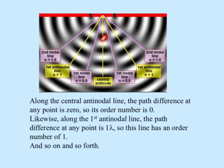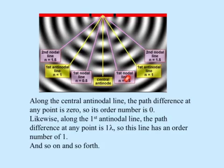Look at this central line. For any point on it, the path from each source is the same, so there is no path difference and the order number is zero. For the next line, the difference between the path from each source is exactly half a wavelength, so the order number is one-half. The same logic applies to all the other lines.